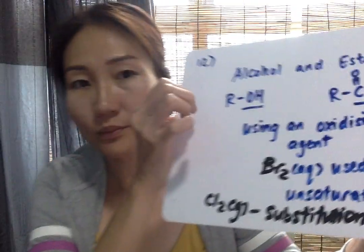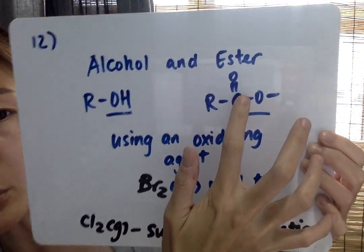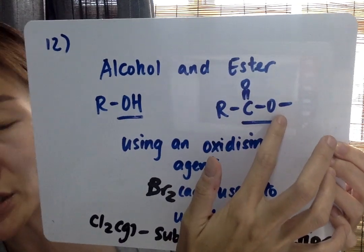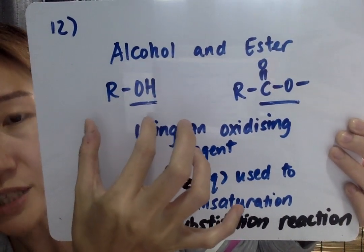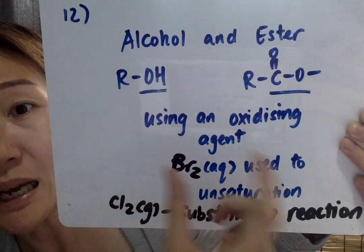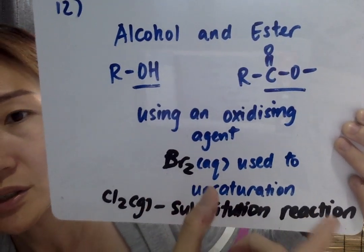Question 12: Which of the following reagents can be used to distinguish between an alcohol and an ester? An alcohol has a hydroxy functional group, while the ester has a C double bond O functional group. The R refers to the alkyl chain, which includes the carbon chain, C and H atoms.